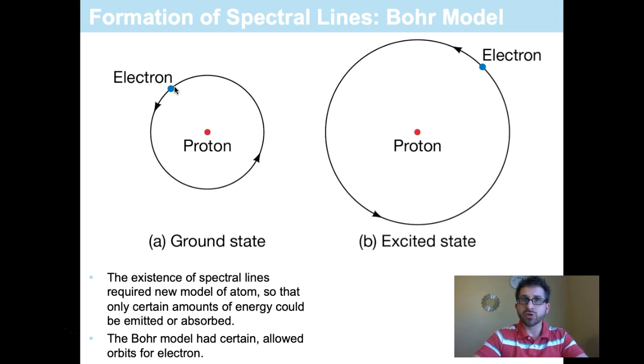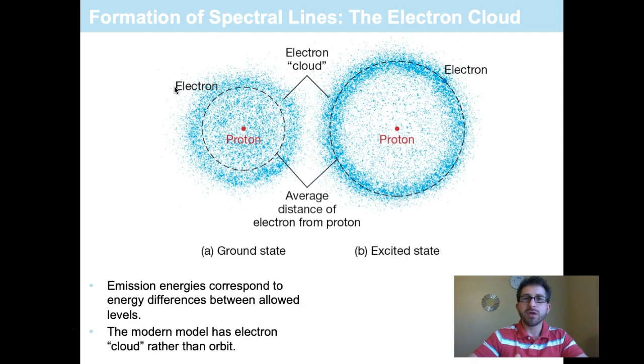When we're talking about spectral lines we can use the Bohr model of the atom to help us to understand this, but it's important to notice that the Bohr model of the atom is not our most accurate means by which describing the atom. That would be the electron cloud model.